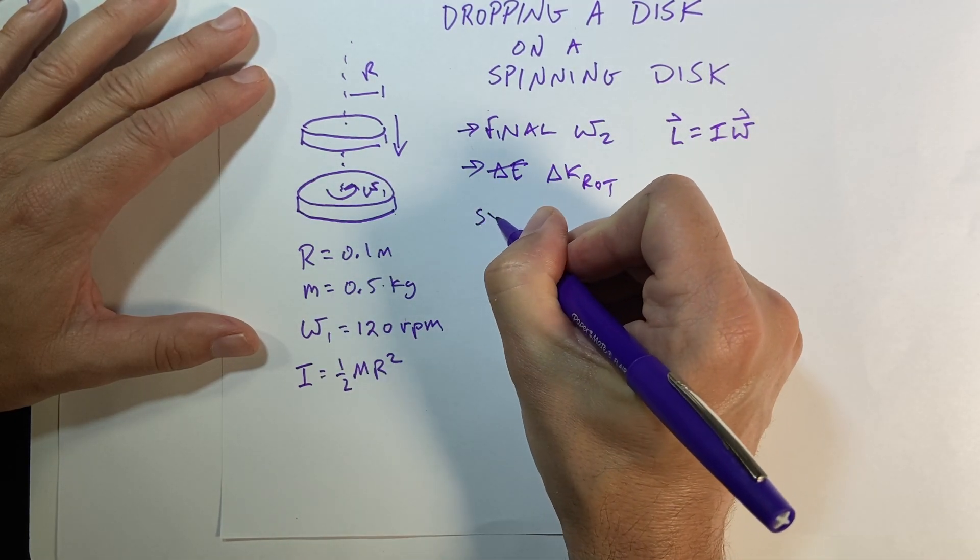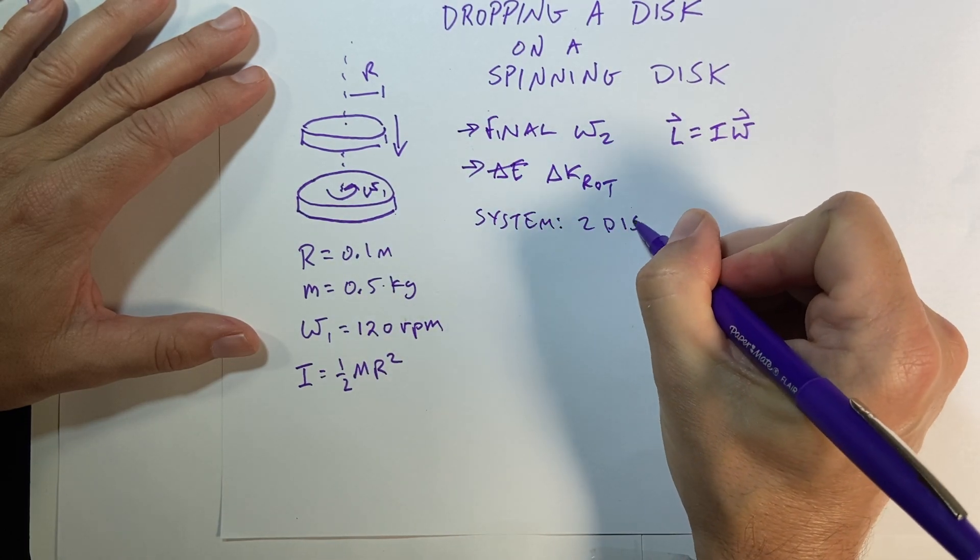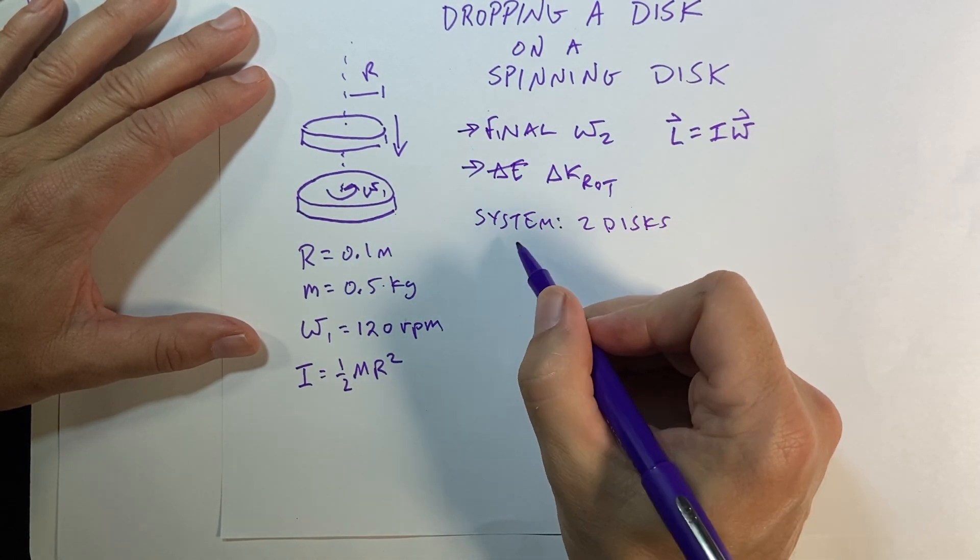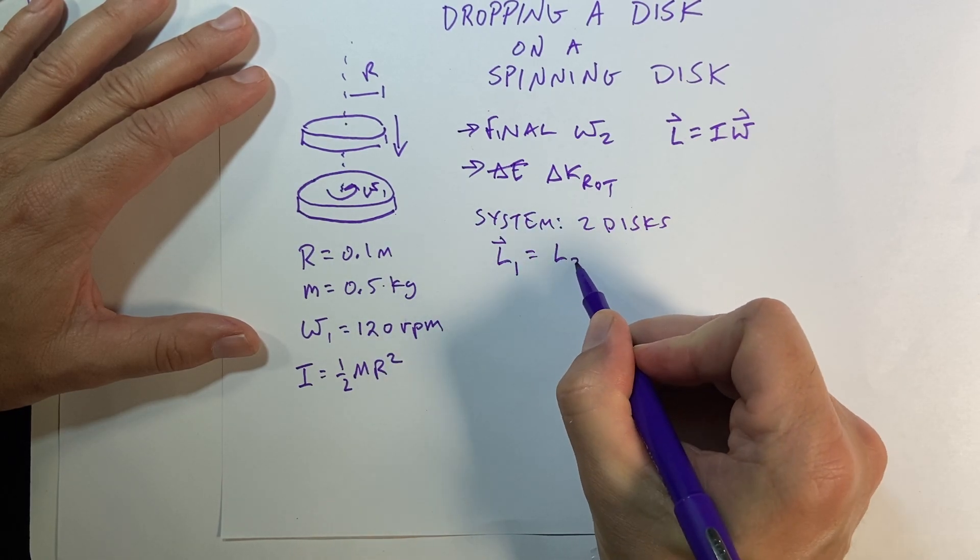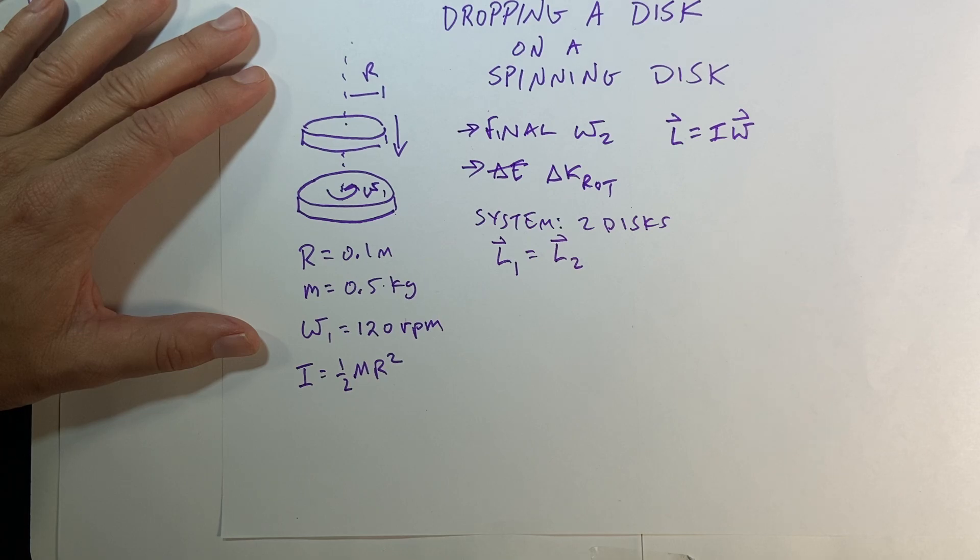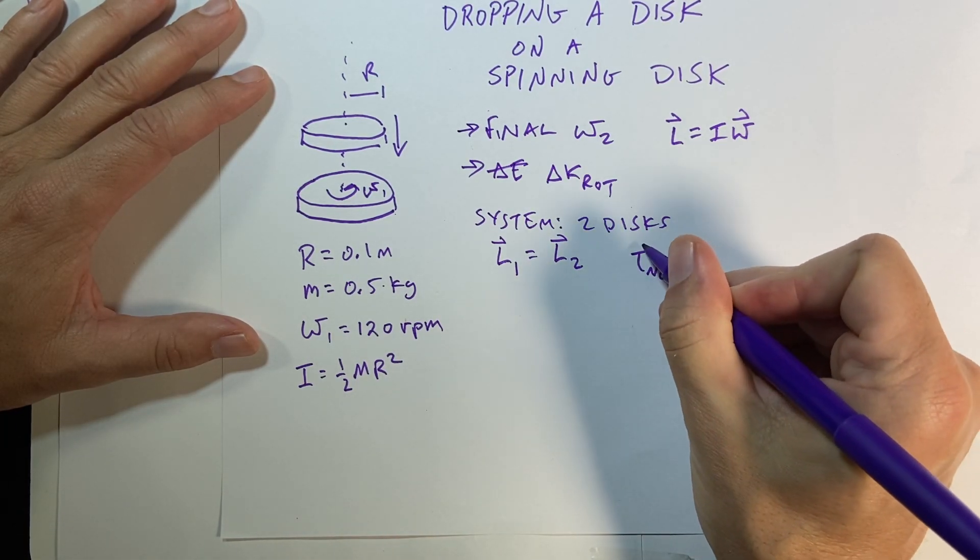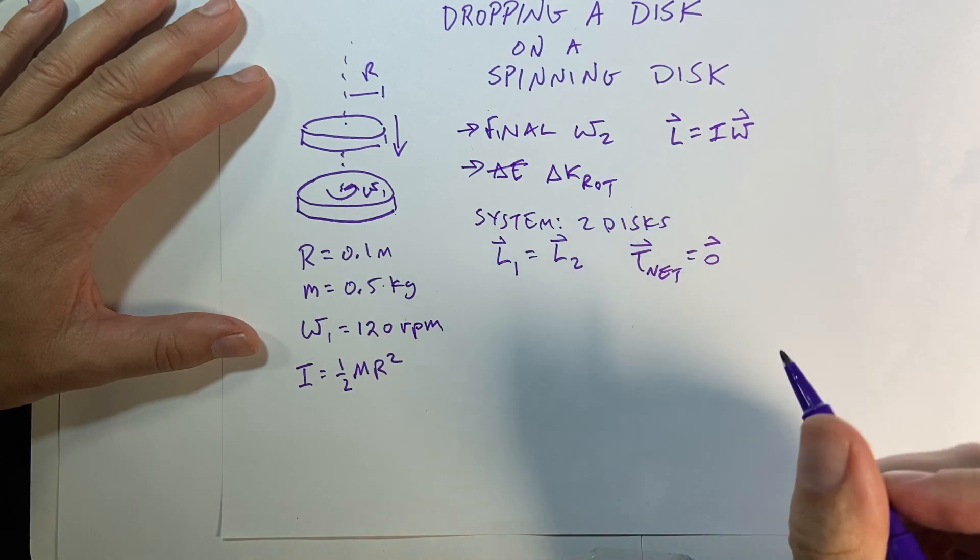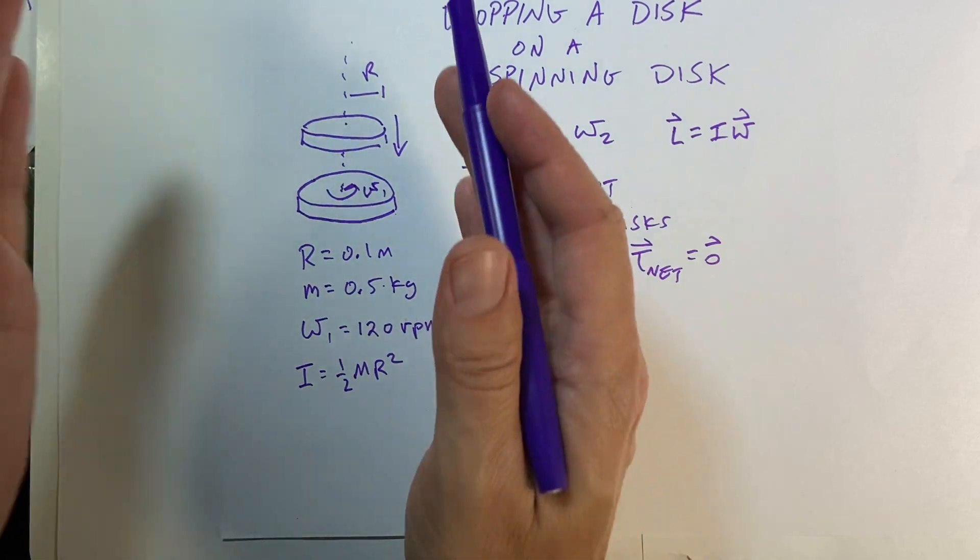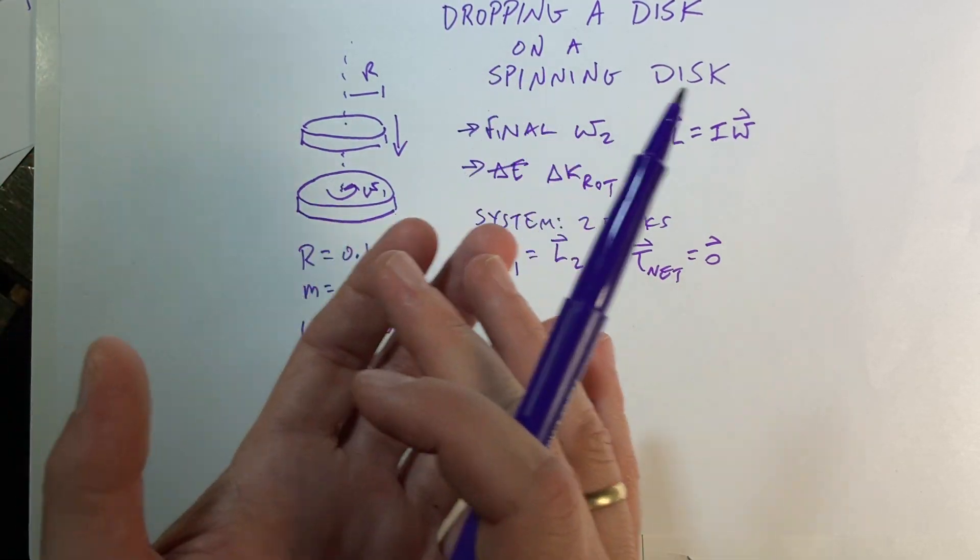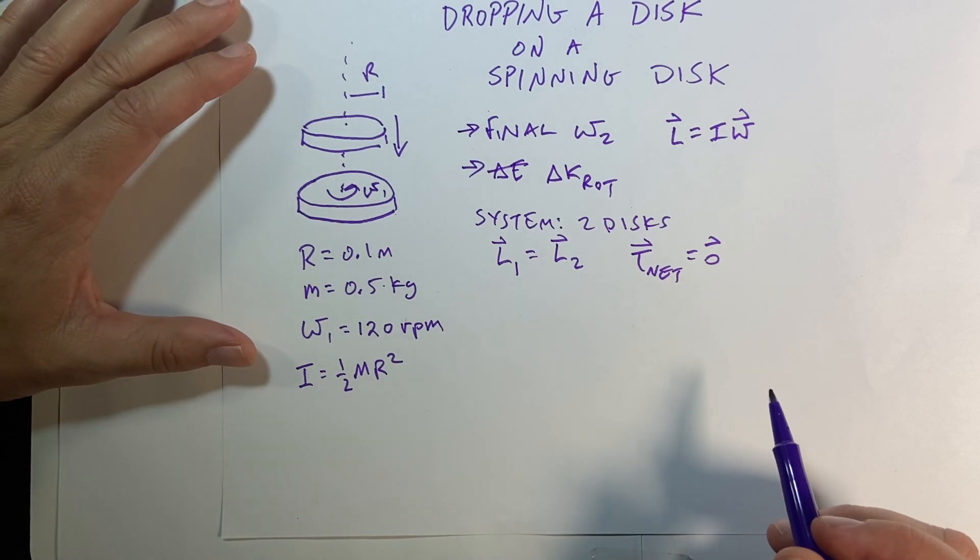So if I choose my system as the two discs, then the angular momentum before they hit is equal to the angular momentum after they collide. And this is true because net torque is zero. So if there's no torque on my system, then the angular momentum should be conserved. So that means the angular momentum before is equal to the angular momentum afterwards.